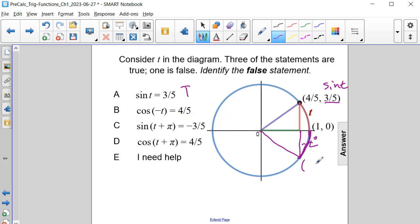Would the cosine of this be four-fifths? The coordinates are four-fifths comma negative three-fifths, and the cosine corresponds to the x-coordinate. So this is also true.